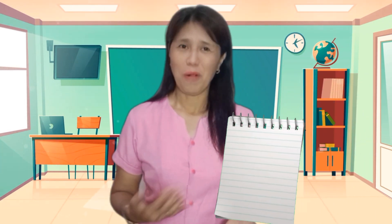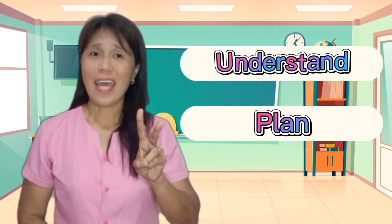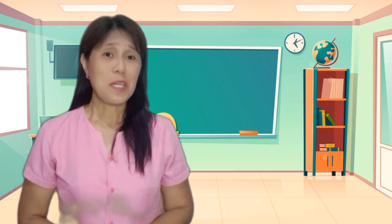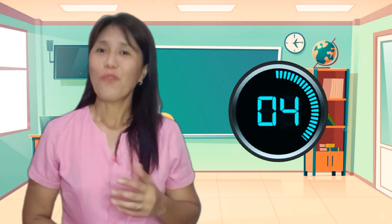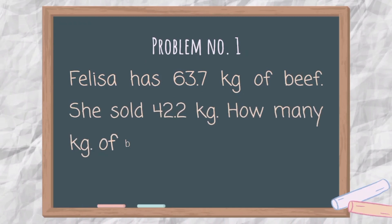Are you now encouraged to move on? Very good! For the practice exercise, you're ready now with your paper and pen. We will solve problems by answering the guide questions under Understand, Plan, and Solve. I'll be giving you 5 seconds for each question. Are you ready? Problem number 1: Felisa has 63.7 kilograms of beef. She sold 42.2 kilograms. How many kilograms of beef were left?